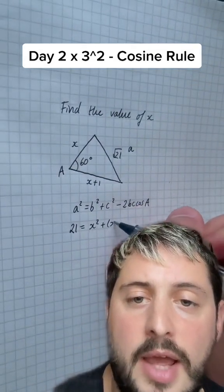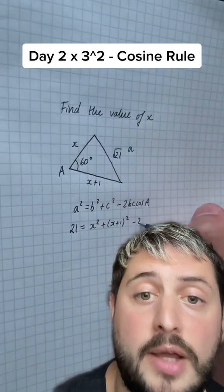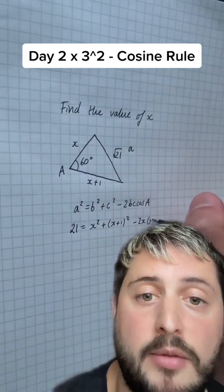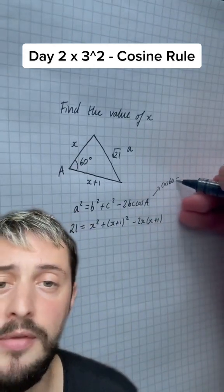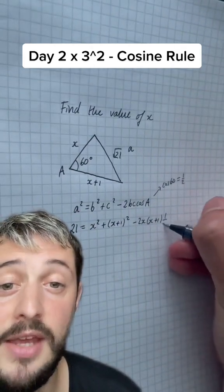You get 21 for a squared, x squared for b squared, x plus 1 squared for c squared, and then minus 2x multiplied by x plus 1 multiplied by cos of 60. Now, cos of 60 is something you should know. Cos of 60 is a half.